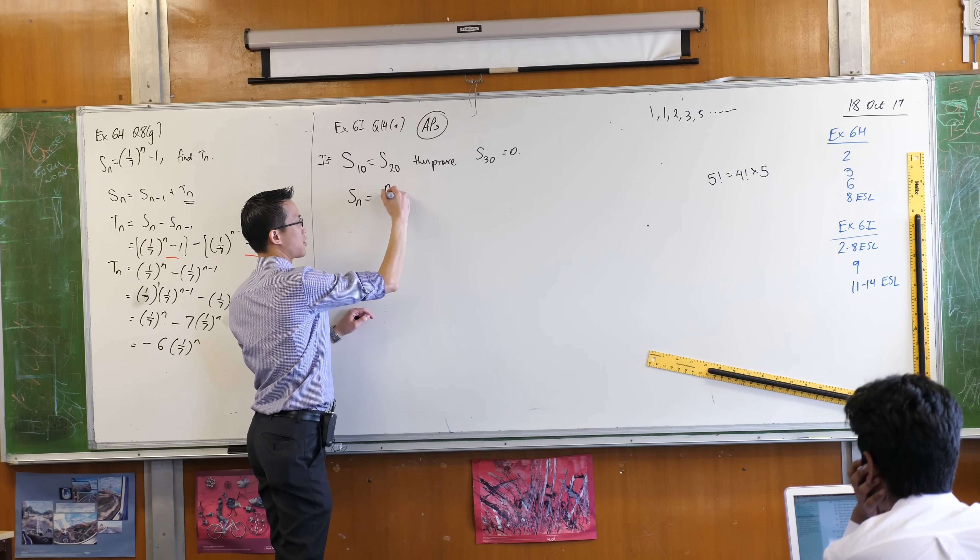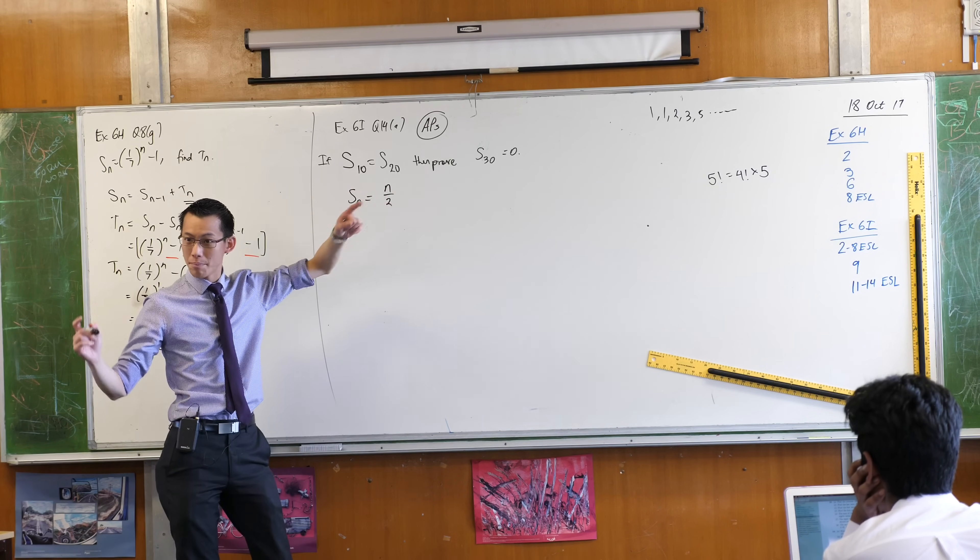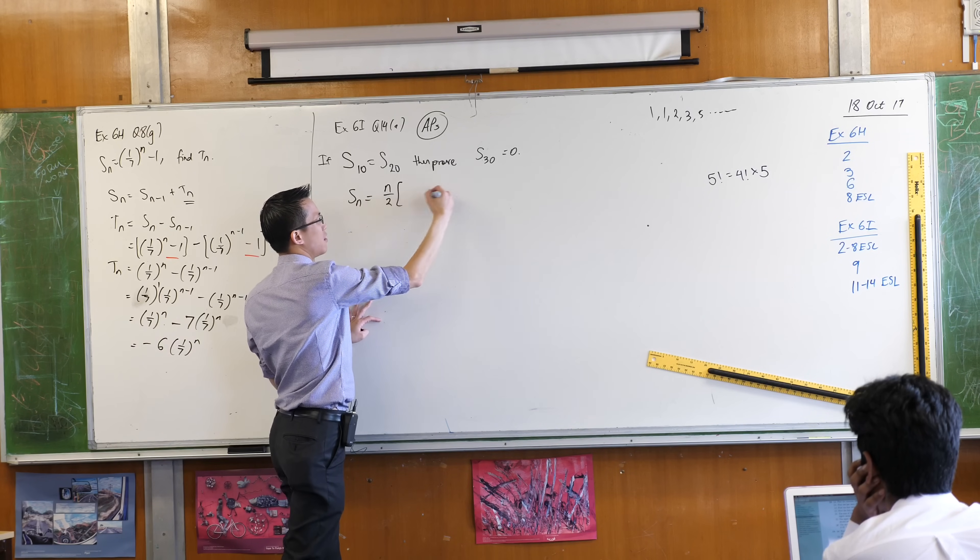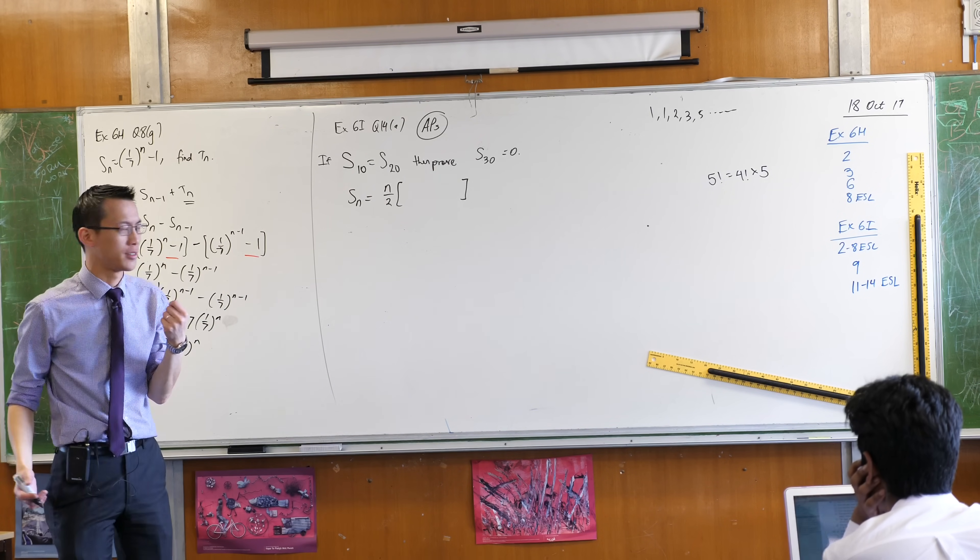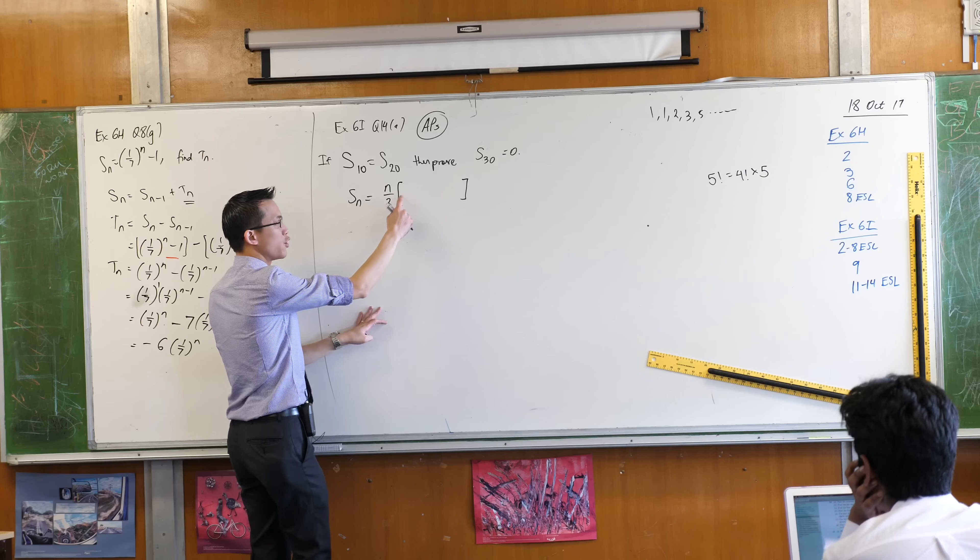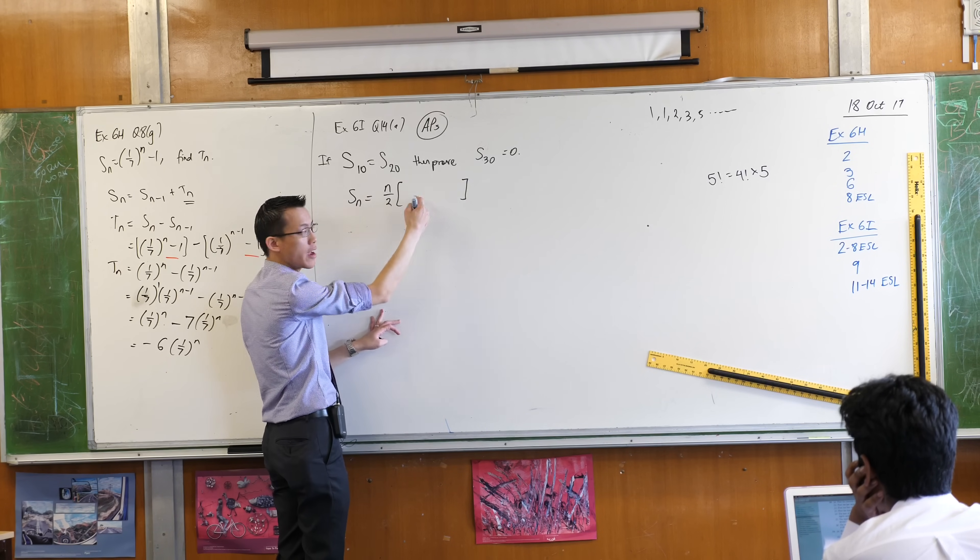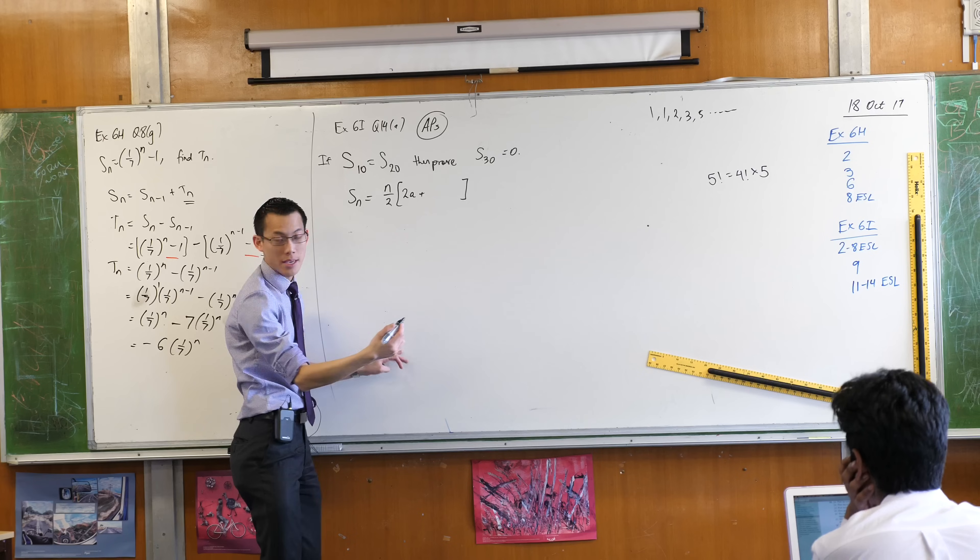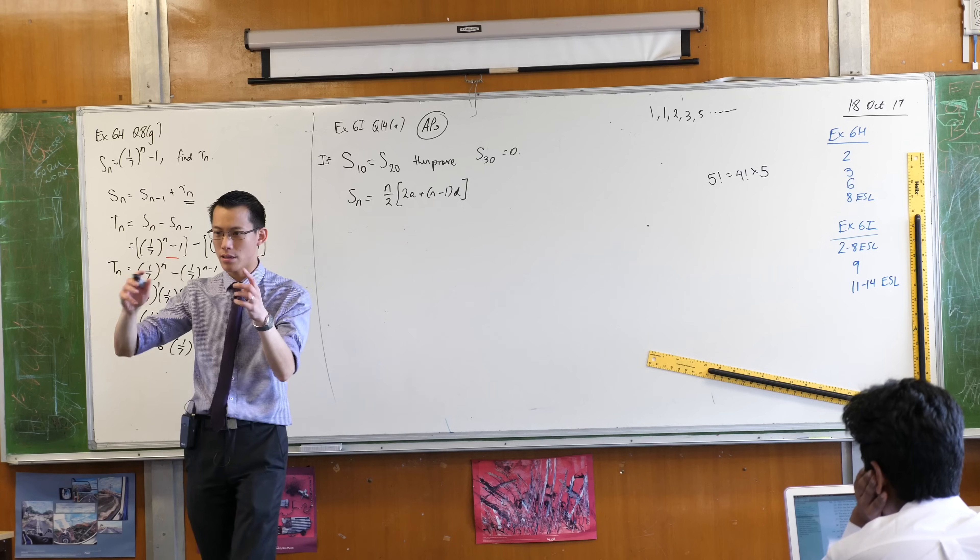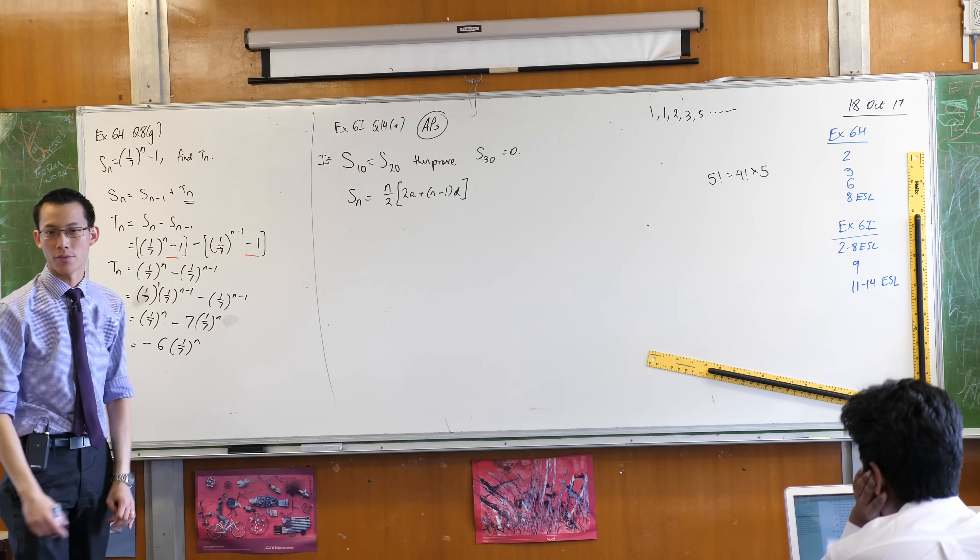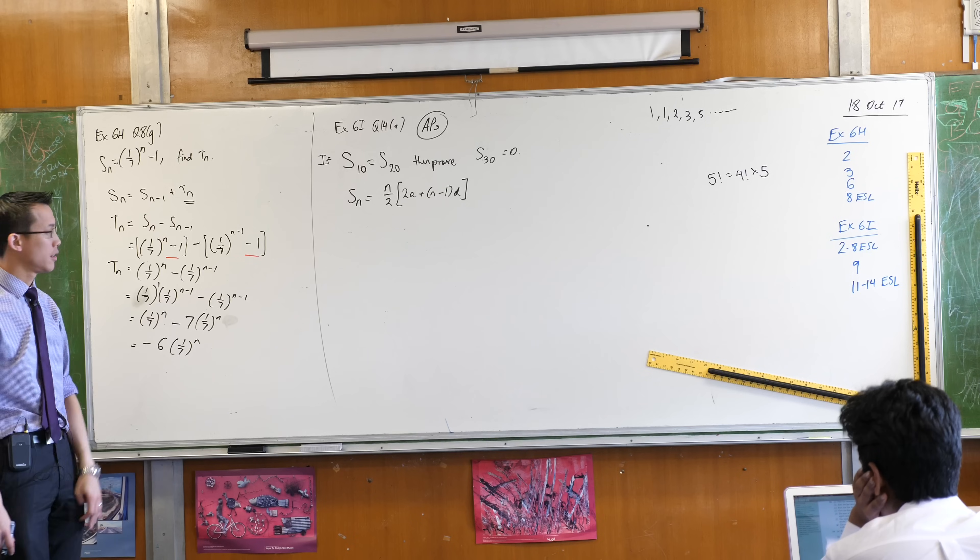I actually have a formula for the nth partial sum when it comes to APs, right? Remember, we talked about the story of Gauss. He paired up terms. Do you remember what's in here? We looked at this morning. So you go with the first term and the last term. And if you want to work out what the last term is, then you get a plus n minus 1d. There's two As, so that's why I have 2a at the front.